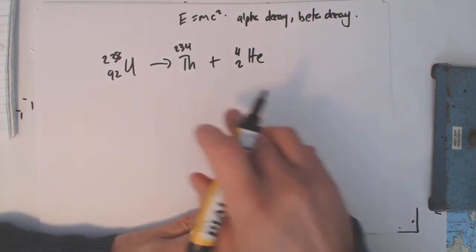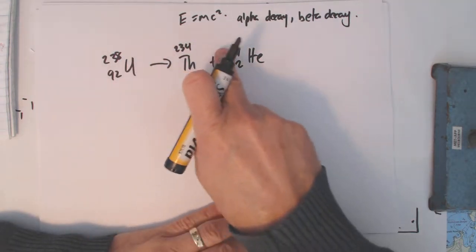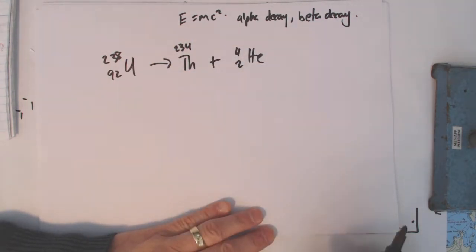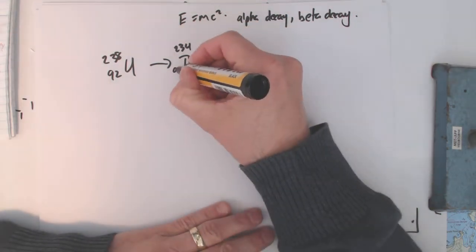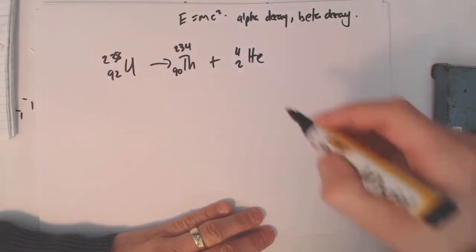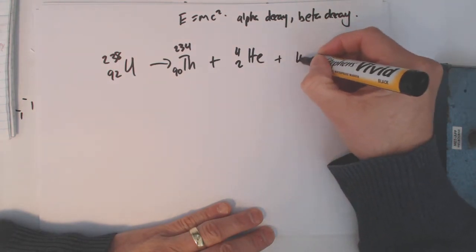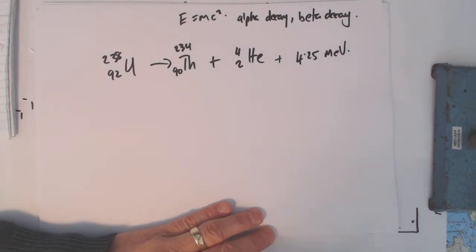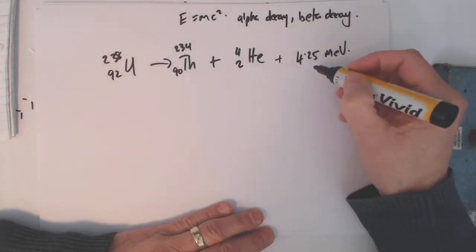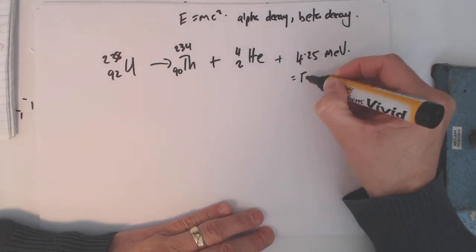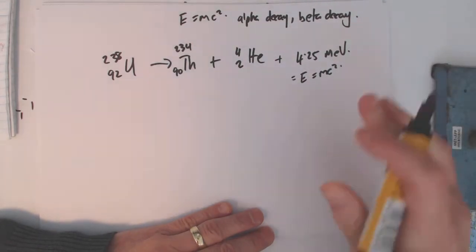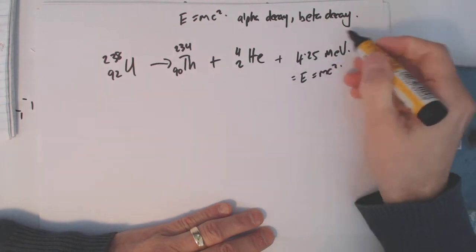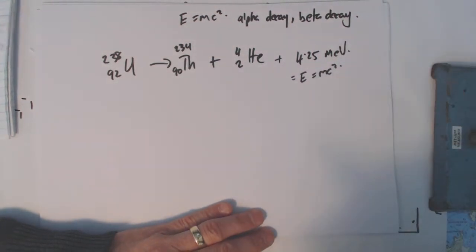In level 2, hopefully you did the equations where you had to make sure the top lines added up. That's the mass units and the bottom lines added up, so we can say that thorium must be a 90. And what we get out of this equation is 4.25 mega electron volts. So we've lost a little bit of mass, and we could work it out by plugging in, by saying that that is E equals mc squared. Remember when you do that, to convert your mega electron volts into joules.